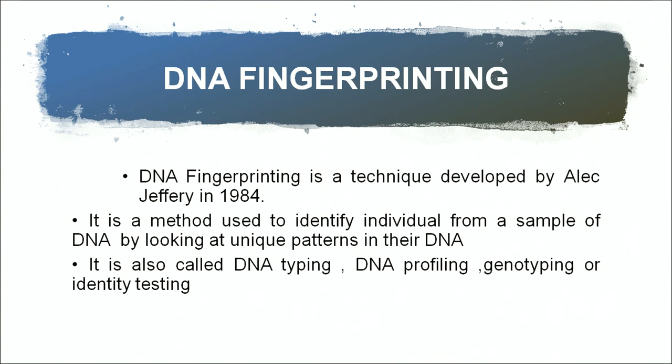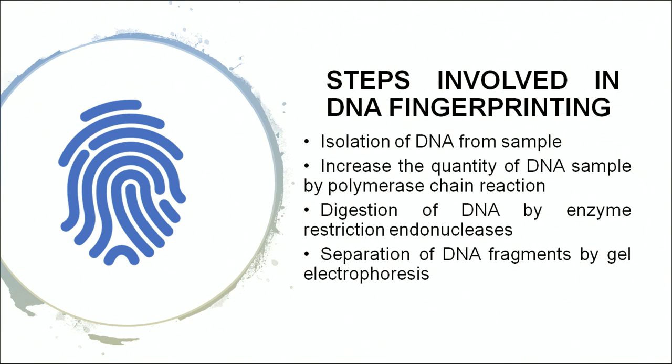These DNA sequences are used in DNA fingerprinting to determine paternity tests. DNA fingerprinting is also called DNA typing, DNA profiling, genotyping, or identity testing. The steps involved are: first, isolation of DNA from the sample; then increasing the quantity of the DNA sample by polymerase chain reaction; then digestion of the DNA by restriction endonuclease enzymes to create sticky ends; and finally separation of DNA fragments by gel electrophoresis, which is based on the charge-to-mass ratio of DNA fragments of different sizes.